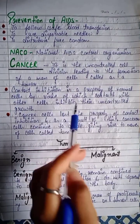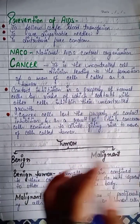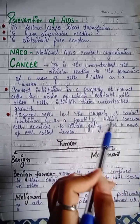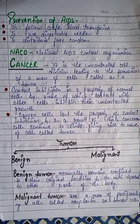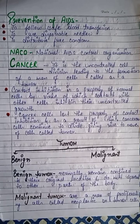Contact inhibition is a property of normal cells by virtue of which contact with other cells inhibits their uncontrolled growth. Normal cells do not divide uncontrollably because their division is inhibited. However, cancerous cells lose this property and continually divide, making a mass of cells called a tumor.